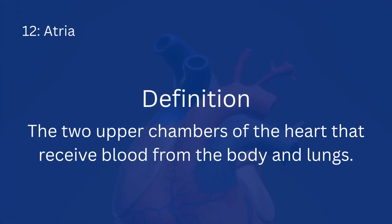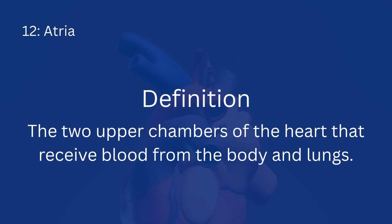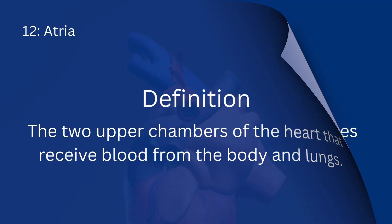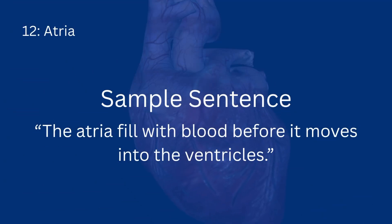We also have the atria. The atria are the two upper chambers of the heart that receive blood from the body and lungs. Example phrase: The atria fill with blood before it moves into the ventricles.